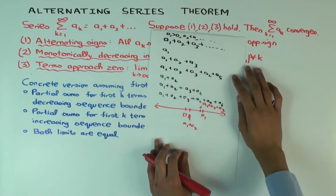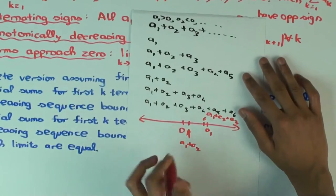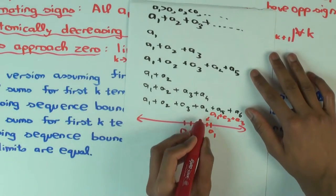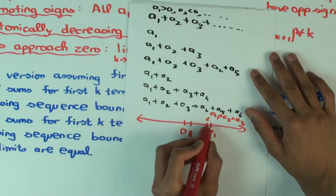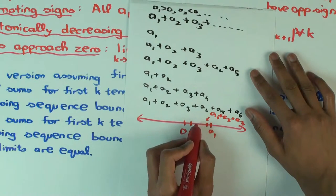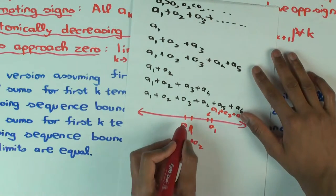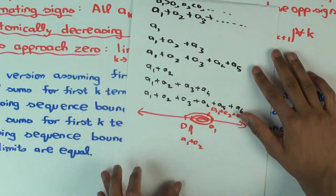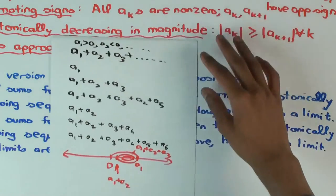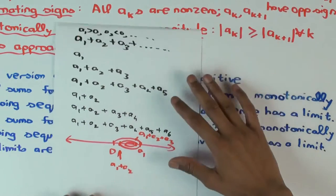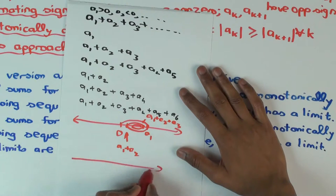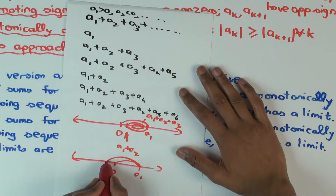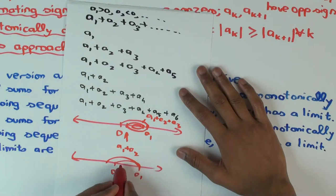From the given information — alternating signs — what that means is I'm going to move forward, then backward, then forward, then backward, then forward, then backward. But we also have monotonically decreasing in magnitude. That means this type of situation cannot happen: it cannot go back more than it went forward.